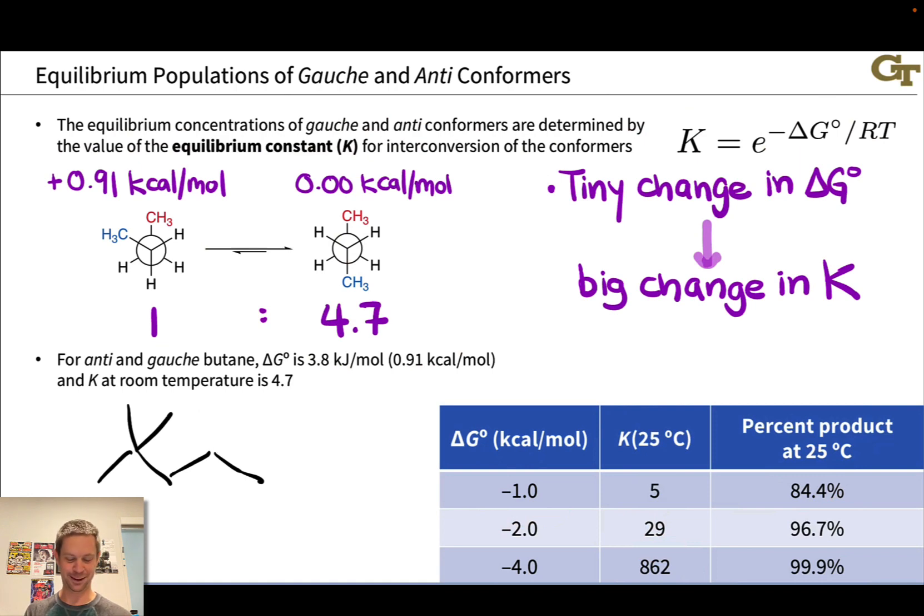the anti-conformer here is going to be far and away the most important to consider. Because, say I had two tert-butyl groups here and here, the anti-conformer with respect to rotation around this bond is going to be very, very favored over the gauche conformer, due to this exponential dependence of K on the energy difference.